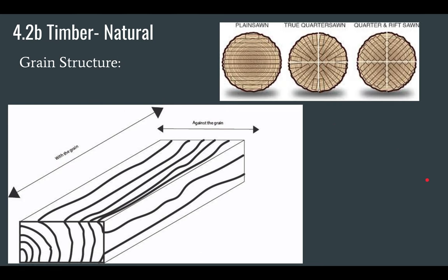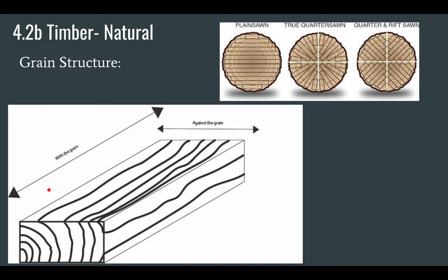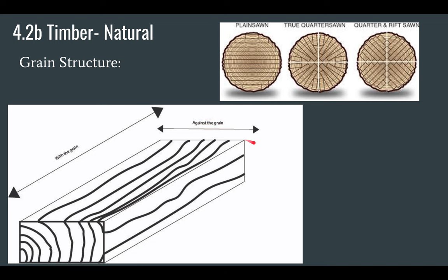I want to talk about grain structure. Because wood grows in rings, when you cut that wood you end up with something called grains, which are really the rings of the tree. One important thing to pay attention to is whether you are working with the grain — running along the grain structure — or against the grain, which is running perpendicular to the grain structure.